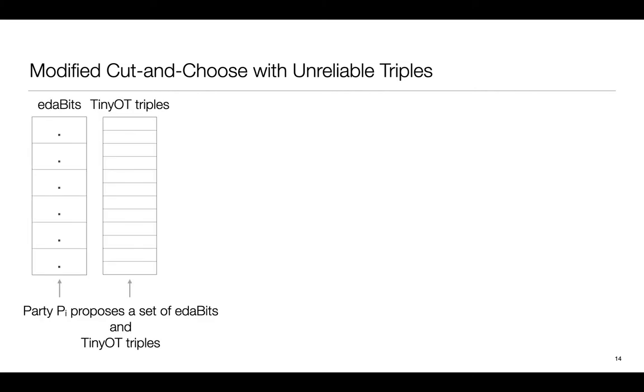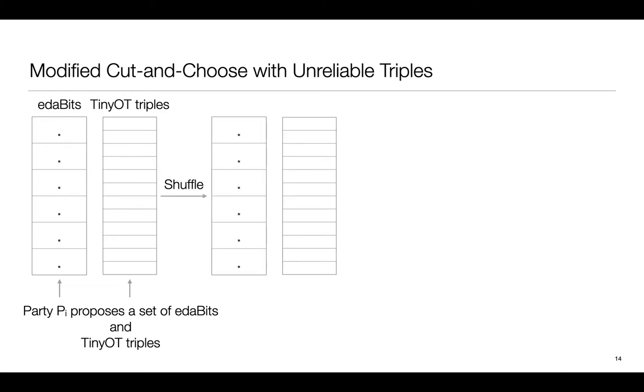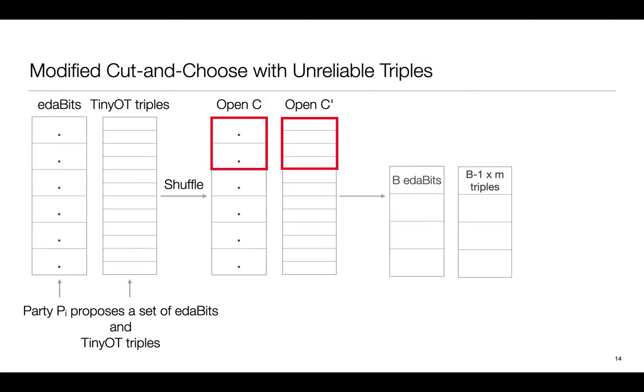This is a modified Cut-and-Choose game at a high level from the perspective of one of the parties. Party PI secret shares a bunch of EDABITS and the required TinyOT triples. We then shuffle them using two publicly sampled permutations. We open C EDABITS and C' TinyOT triples and verify the consistency. If any of them are inconsistent, we abort. The remaining EDABITS are placed into buckets of size B and triples are placed into buckets of size B-1 times M. As there are B-1 pairs of checks within each bucket.